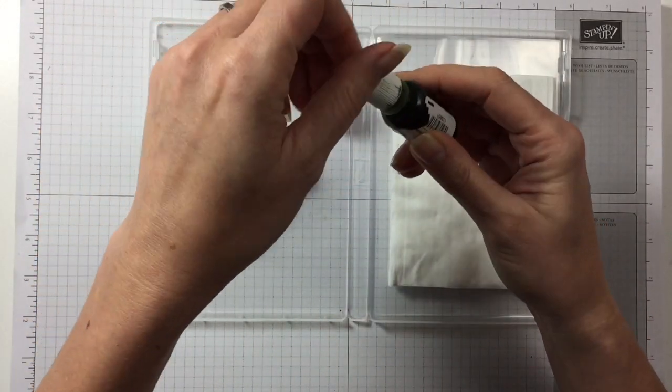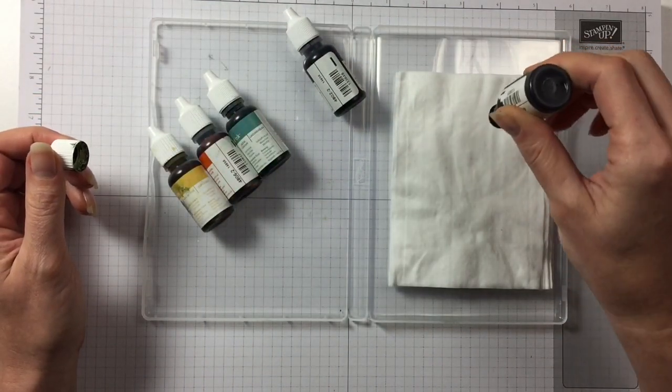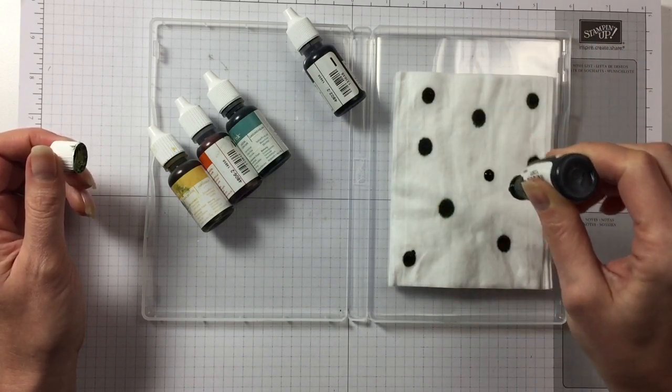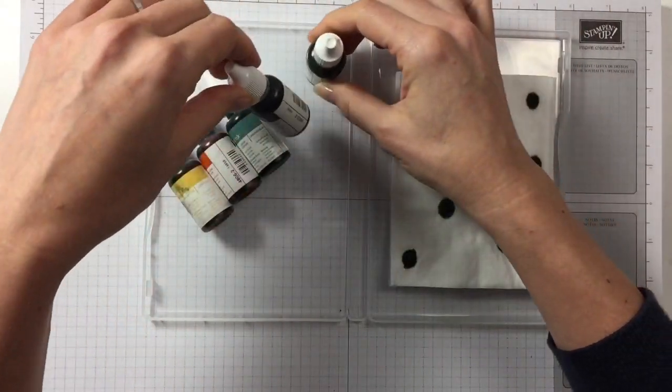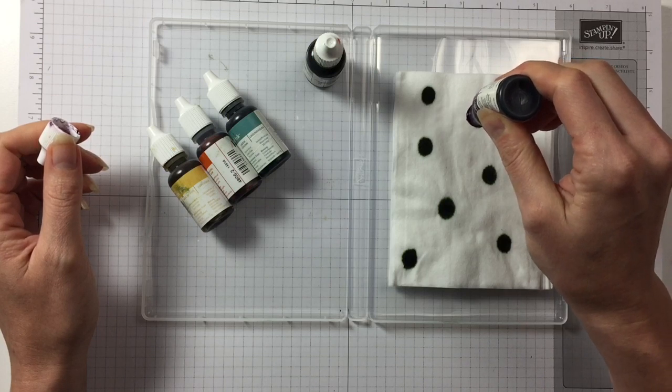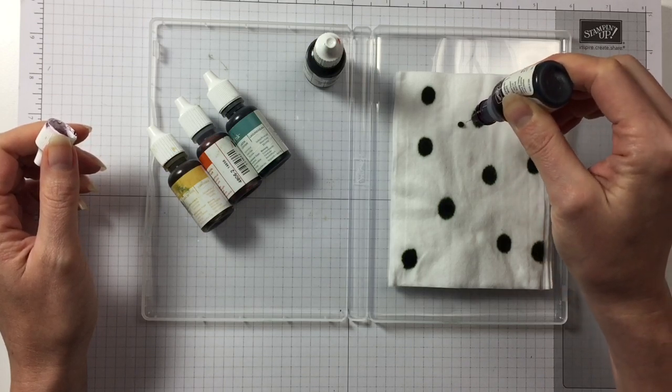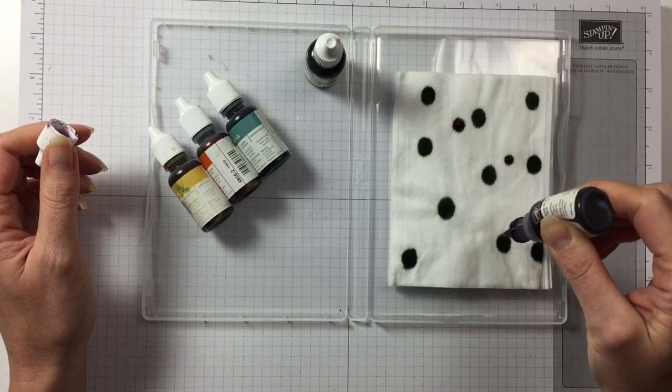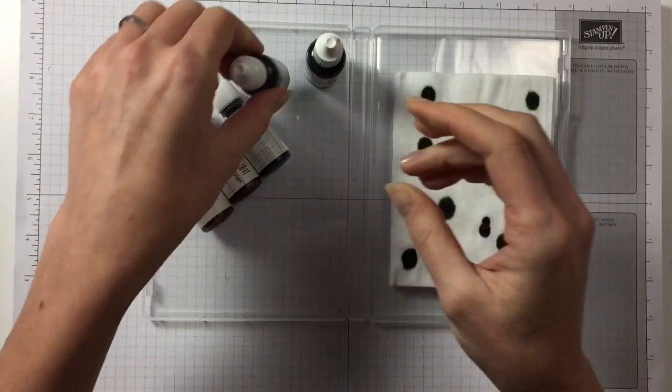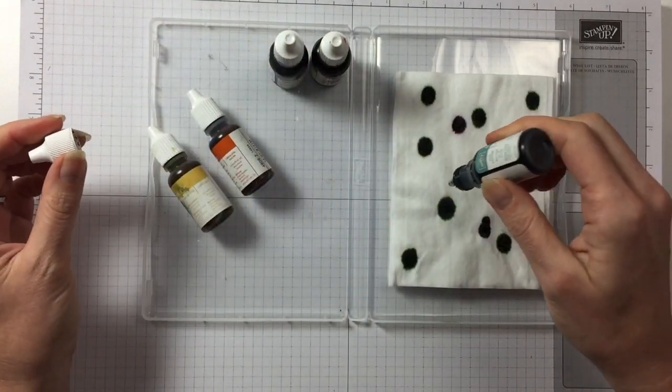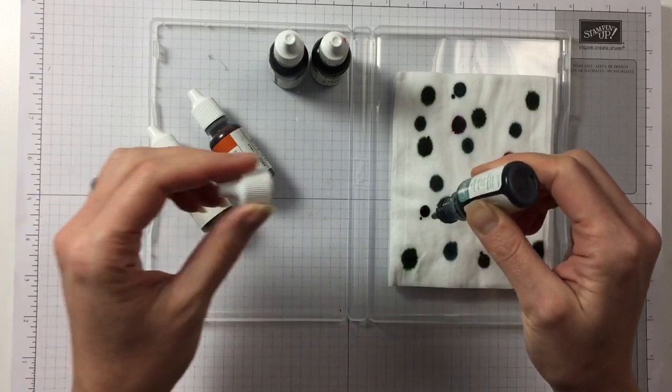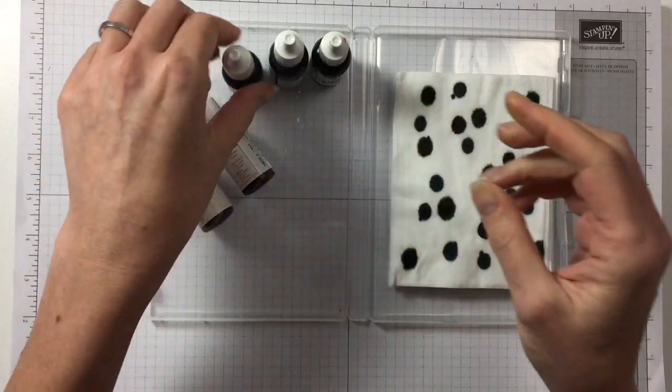We want to get started with some green, so let's put some Mossy Meadow on. This one is nearly empty, I think I've got another one. I do use my re-inkers quite a lot. And we put some Blackberry Bliss. It's really almost gooey when it comes out, it's not so liquid as all the other inks that we use.